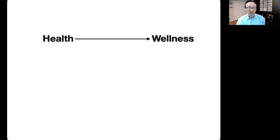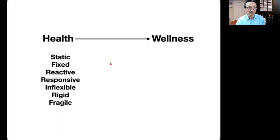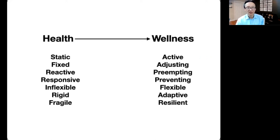So this chart up here, I kind of think about where we are right now in modern healthcare, which is this definition of health. And also as you progress to the right, it's wellness. The traditional health is thought of as something that's static, fixed, reactive, responsive, inflexible, rigid, and fragile. Whereas on the other side, if you're well, that's a very active form of being, adjusting, constantly preempting, preventing, being flexible, adaptive, and resilient. Health on the left is a static noun, and wellness is an action verb. It's a lifestyle or state of mind.